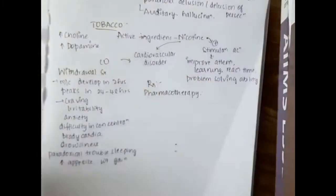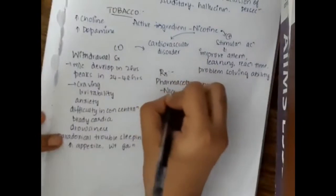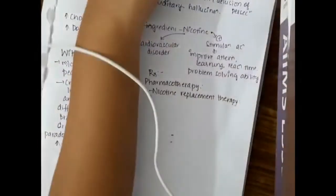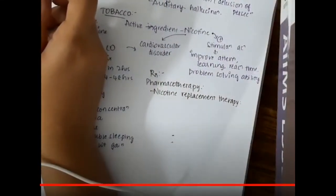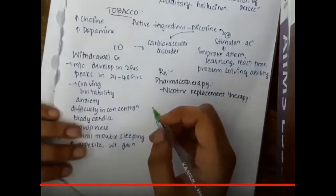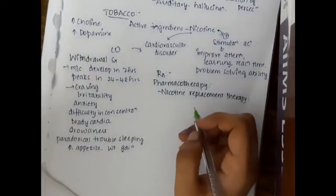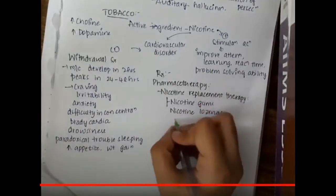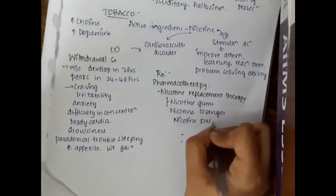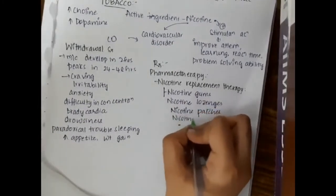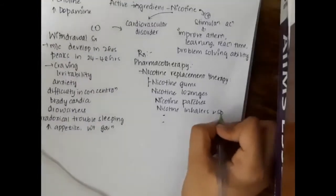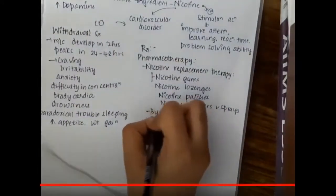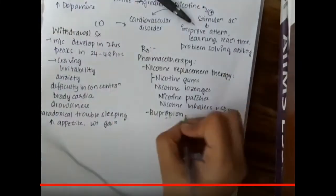If we see the treatment, in pharmacotherapy first we have nicotine replacement therapy where we give nicotine gums, nicotine lozenges, nicotine patches, inhalers and sprays. These will replace the nicotine and give the pleasure that the patient gets while smoking.